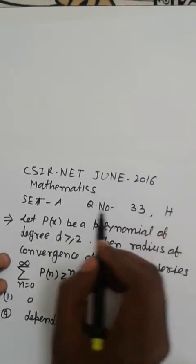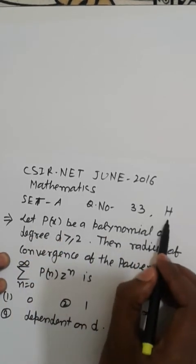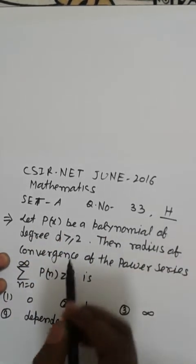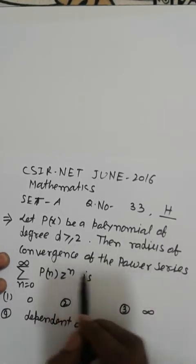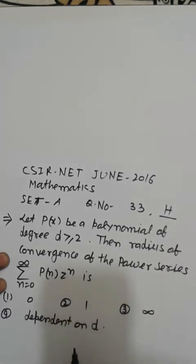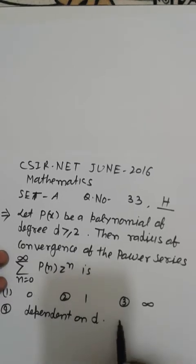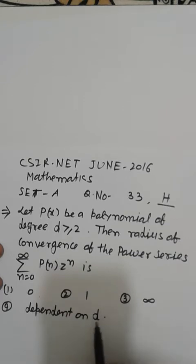CSIR NET June 2016, Mathematics, Set A, Question Number 33. Let P(n) be a polynomial of degree d ≥ 2. Then the radius of convergence of the power series Σ P(n)z^n is: Four options are given: 0, 1, infinity, and dependent on d. This is a power series problem from CSIR NET.